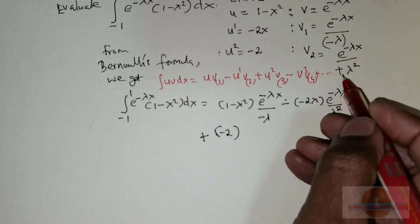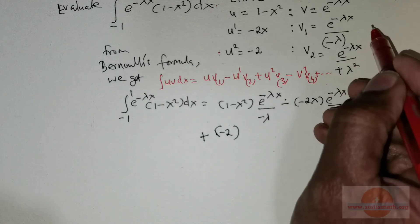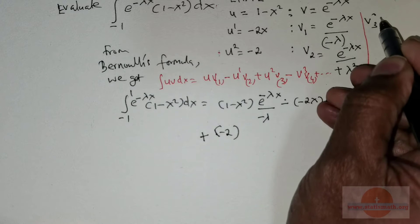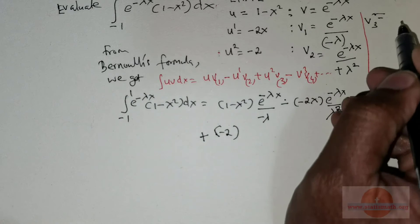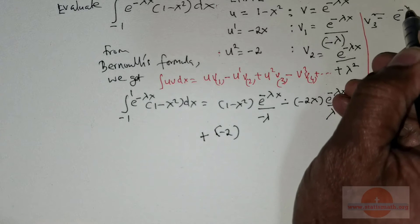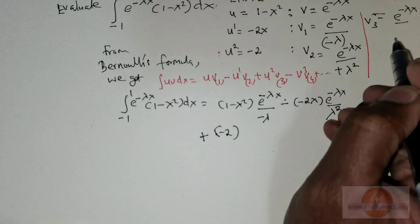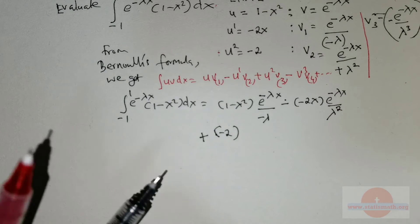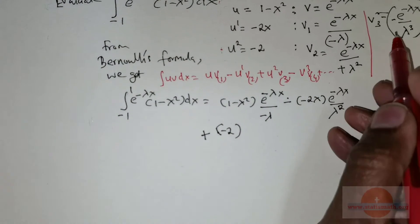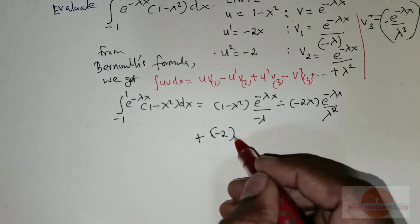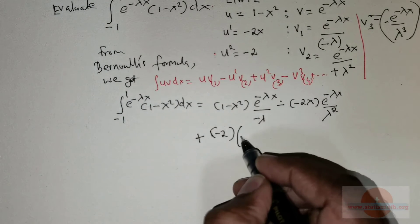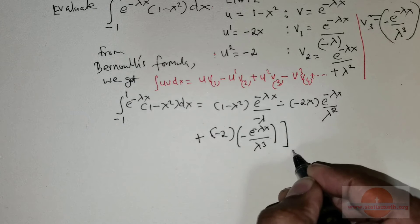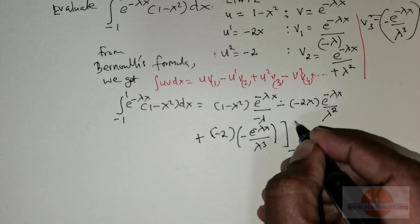Now, followed by a positive sign, we have u₂ which is negative 2. We still need v₃. Integrating e to the power negative lambda x gives e to the power negative lambda x, and since there is already a lambda squared in the denominator, this becomes negative lambda cubed. So v₃ equals negative e to the power negative lambda x divided by lambda cubed. The entire expression is evaluated with limits from negative 1 to positive 1.